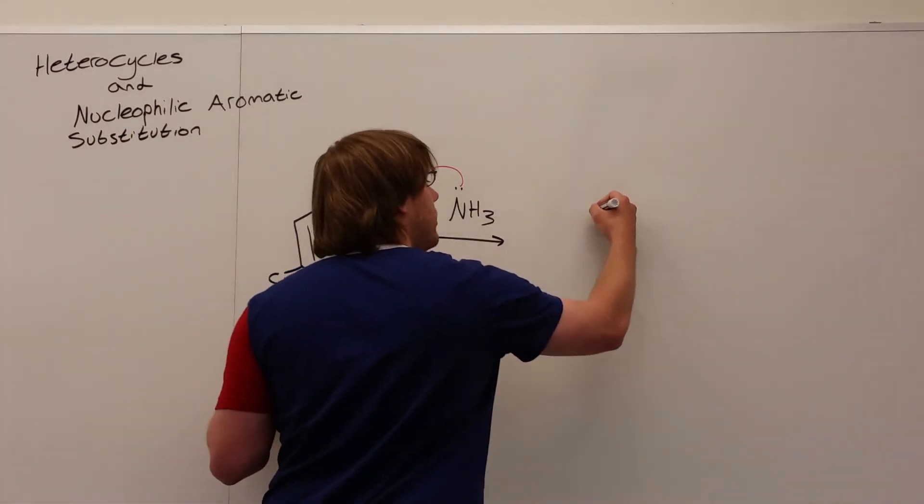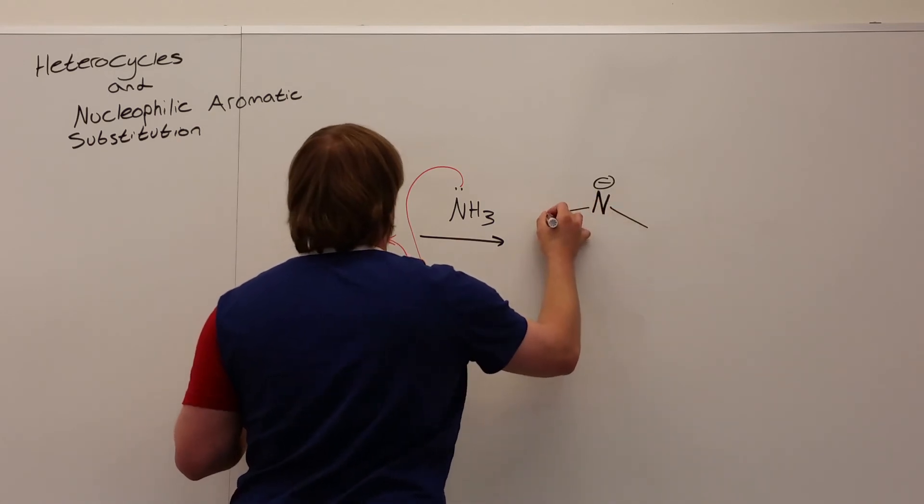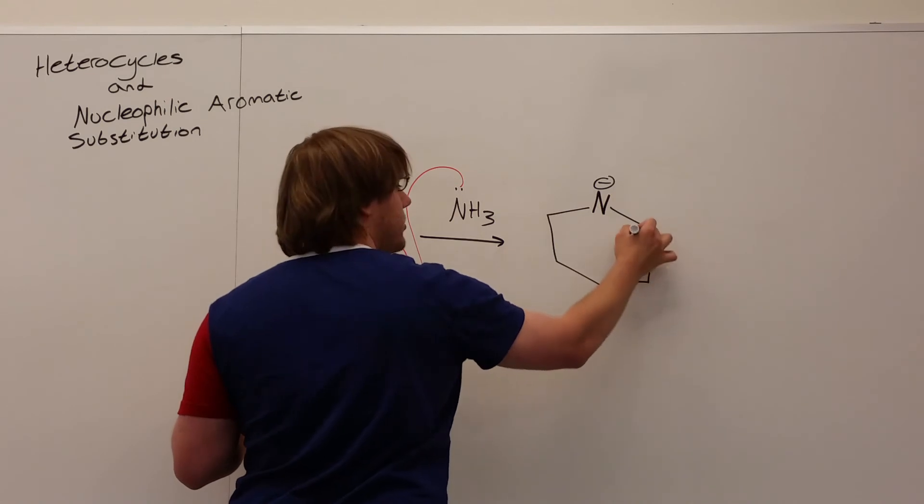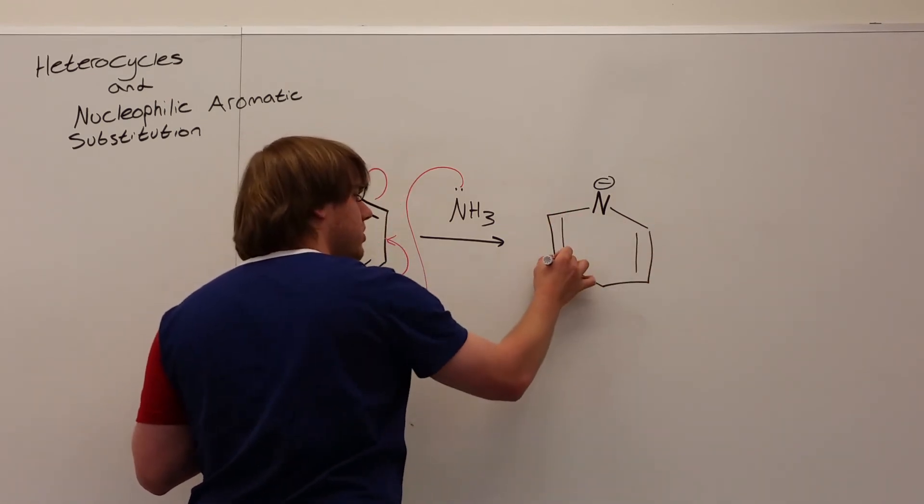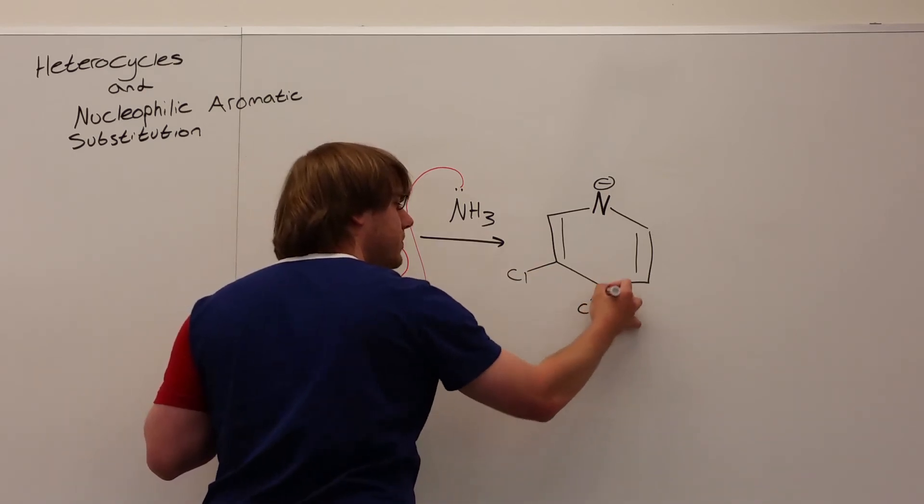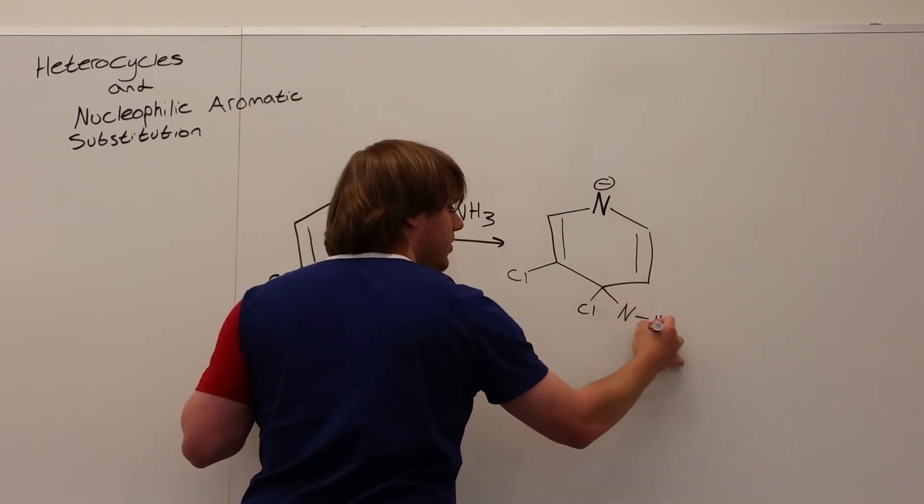And so what we'll have is N minus on a single bond. This double bond has resonated over here. This double bond has been unchanged. We still have the chlorine in the meta position, and now we have the chlorine and the NH3 positive.